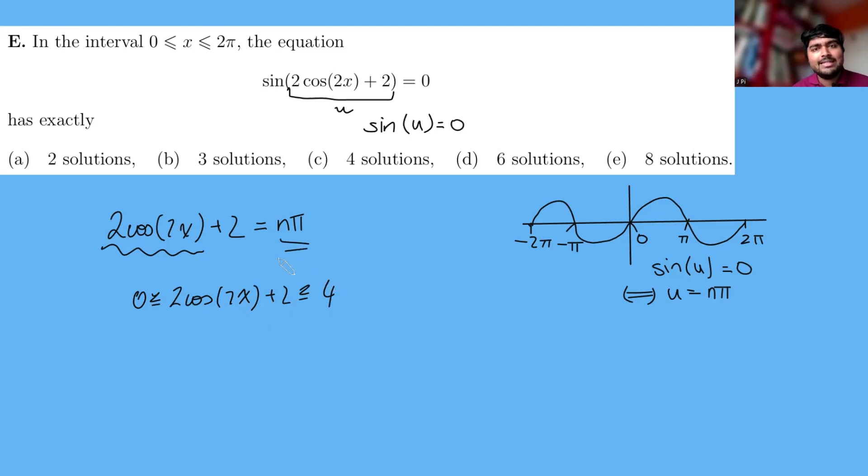But we also know that it has to be an integer multiple of pi. So what integer multiples of pi are there between 0 and 4? Well, there's 0 because 0 times pi is still 0, so this could equal 0. Or it could equal pi because pi is 3.14 and so on.